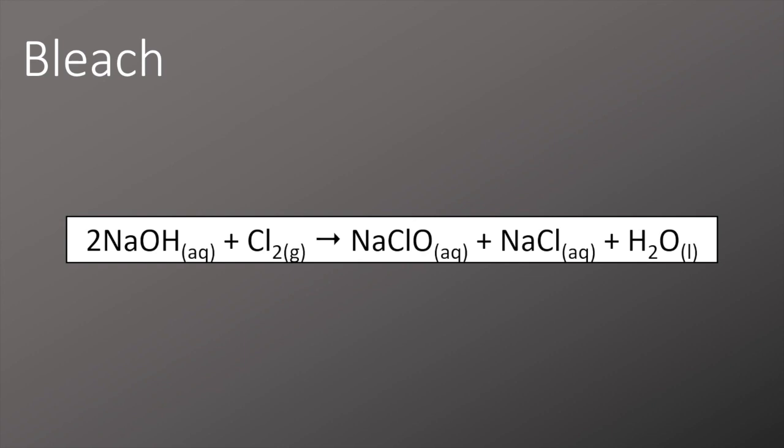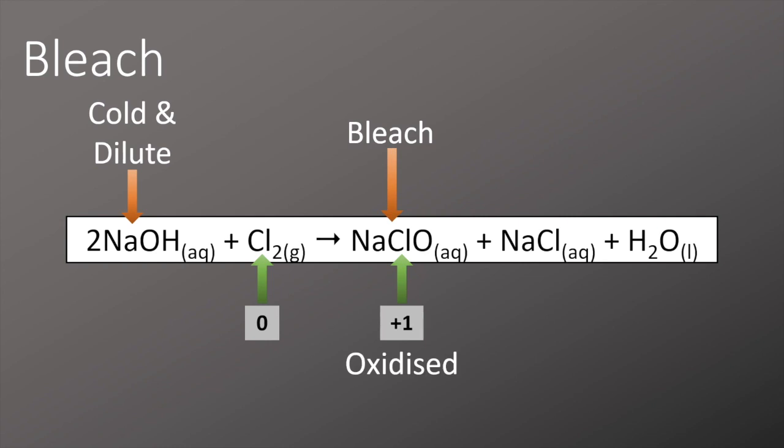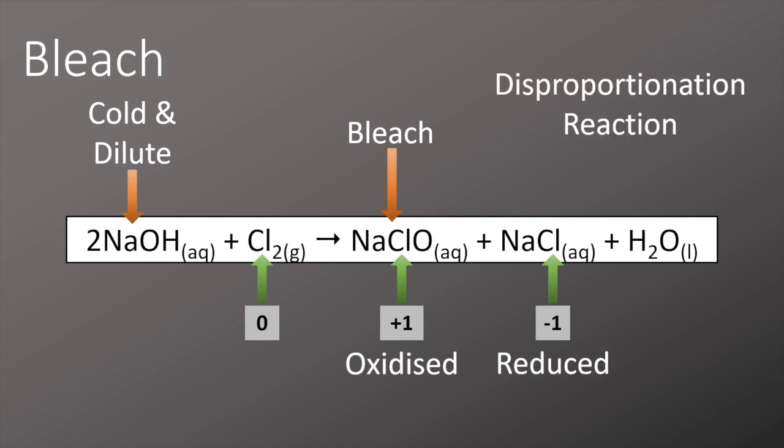Bleach is a useful chemical mainly used for killing bacteria and bleaching paper and textiles. We can form bleach by reacting cold dilute sodium hydroxide with chlorine gas. This forms NaClO, which is also known as bleach. In this chemical reaction, chlorine starts off with an oxidation state of zero. In NaClO, the oxidation state of chlorine is now plus one, showing that chlorine has been oxidised. In NaCl, the oxidation state of chlorine is now minus one, showing chlorine has been reduced. This is an example of what we call a disproportionation reaction. This is where the same species from the beginning has both been oxidised and reduced in the course of the reaction.